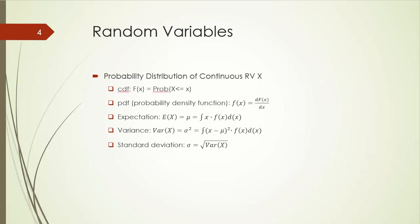Now let's look at continuous random variables and their probability distributions. A continuous random variable also has a CDF — cumulative distribution or density function — defined the same way: the probability that the random variable takes a value less than or equal to a given value. Continuous random variables do not have PMF. Instead, they have probability density function, or PDF. PDF is conventionally written as lowercase f of lowercase x, which is the first-order derivative of CDF with respect to x. We try to avoid using much calculus and simply present it here for your information.